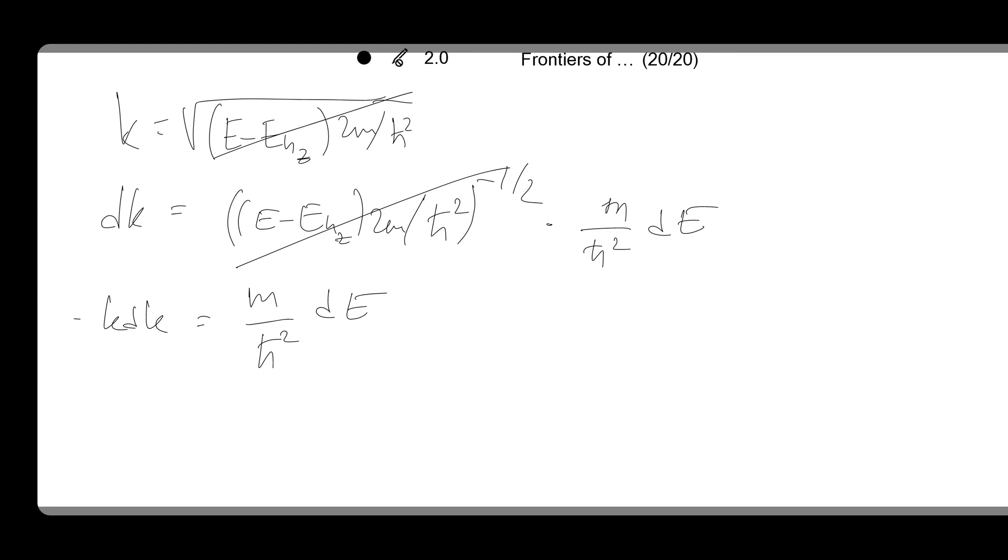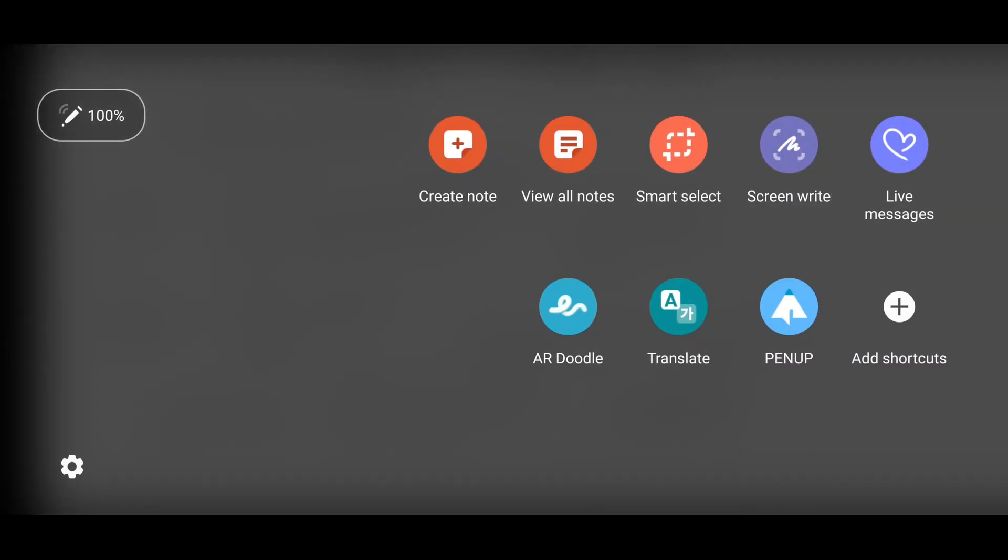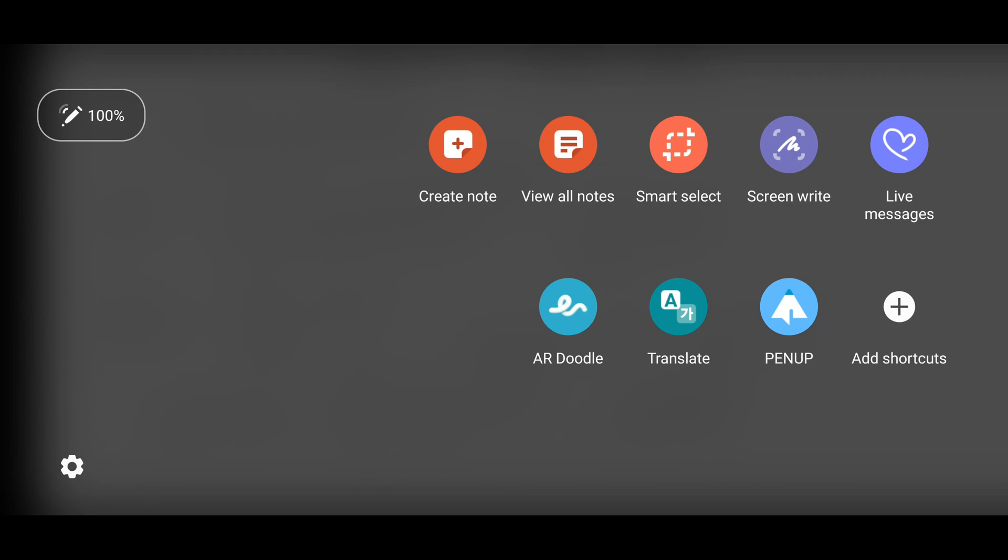So for each nz level, for each nz, we will have g of k dk will be A over pi times m over h-bar squared dE. And then the g of E dE, per unit area again, so we can remove this A from the consideration, is m dE over pi h-bar squared.